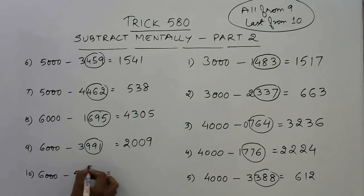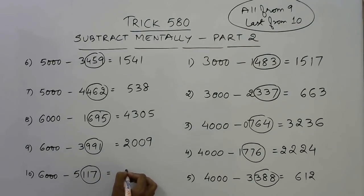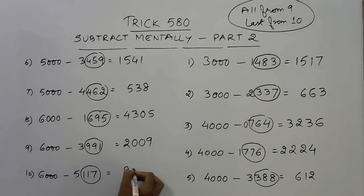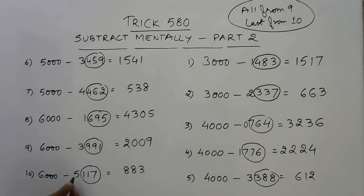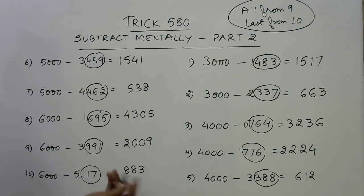Final question: subtract 5117 from 6000. Last three digits 117: 9 minus 1 is 8, 9 minus 1 is 8, 10 minus 7 is 3. Increase the leading digit 5 by 1 to get 6, and 6 minus 6 is 0, so we don't write that zero. The answer is 883.